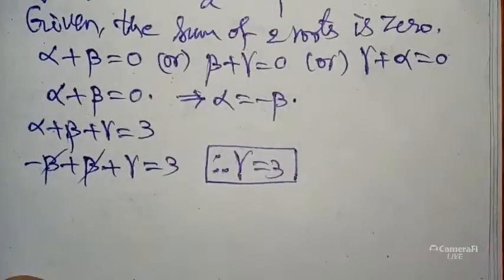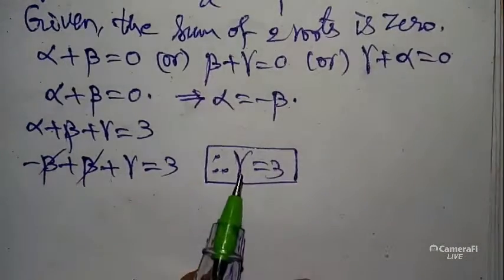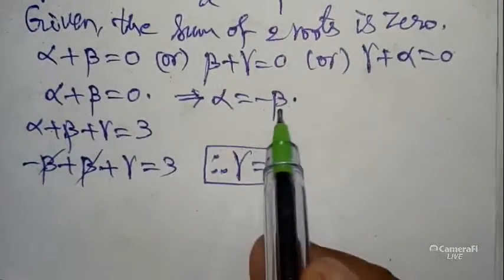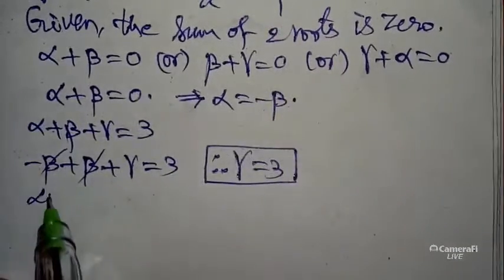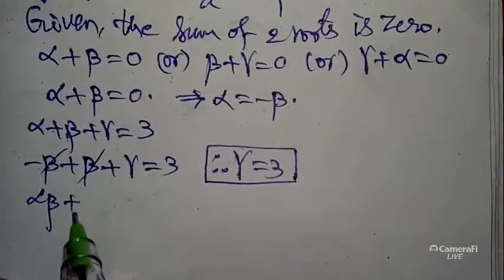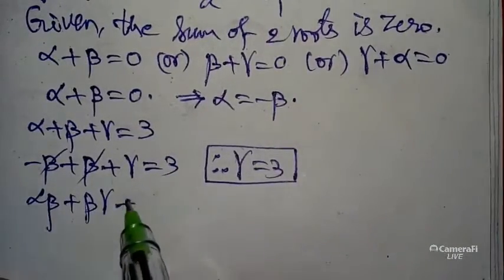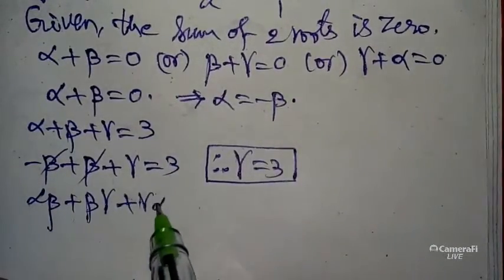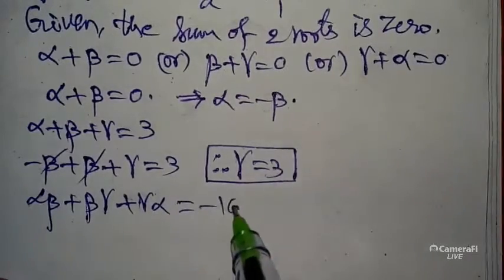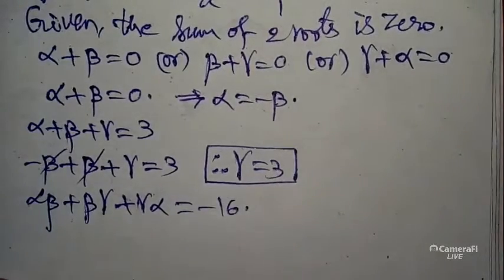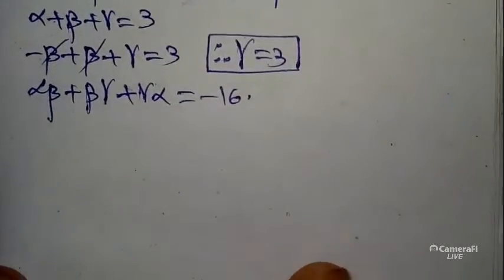The -beta and +beta cancel, giving gamma = 3. Now substitute alpha = -beta into the second formula: alpha·beta + beta·gamma + gamma·alpha = -16.